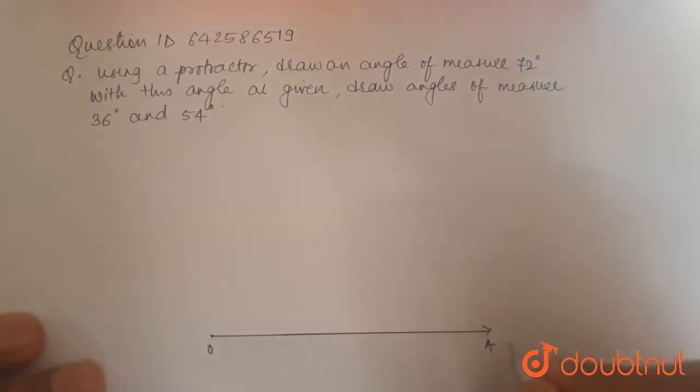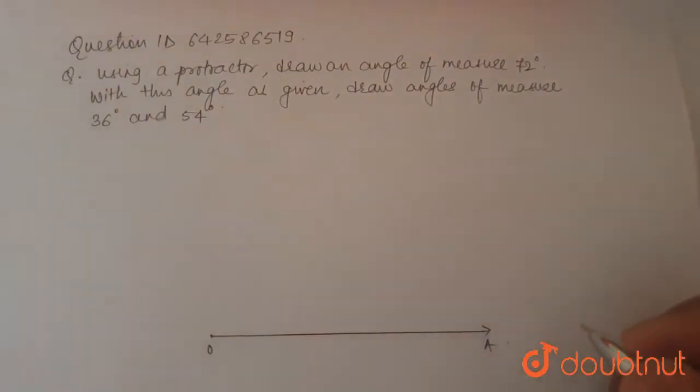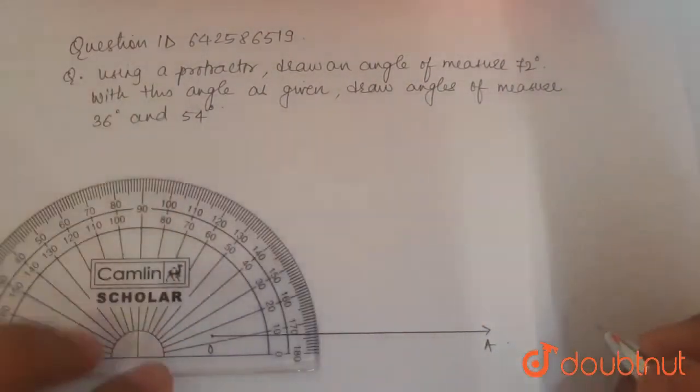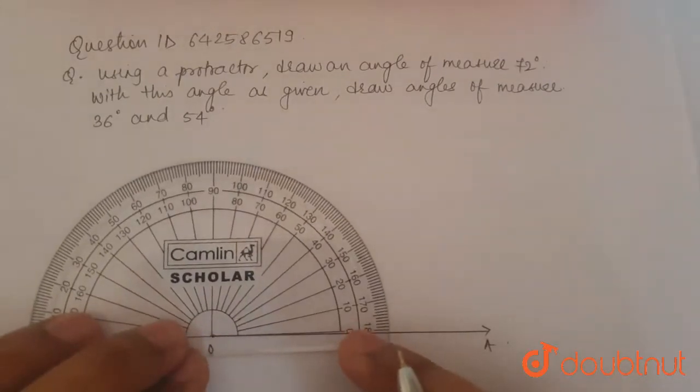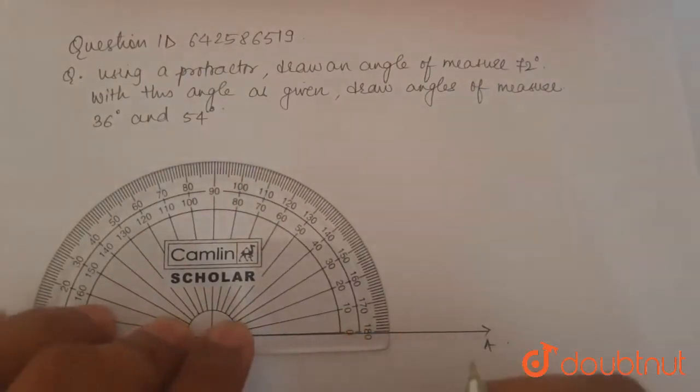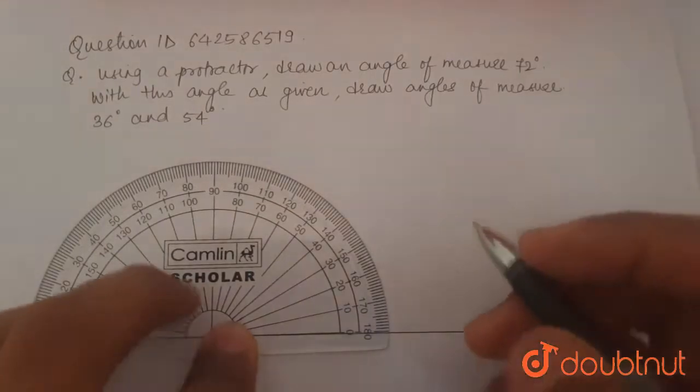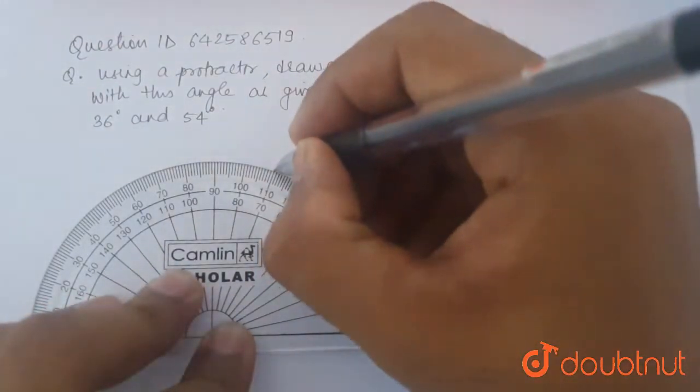And then using a protractor as mentioned in the question, we make an angle of 72 degrees, which is over here.